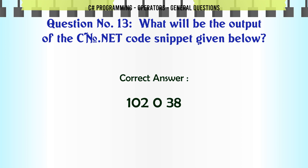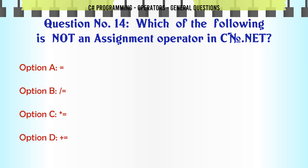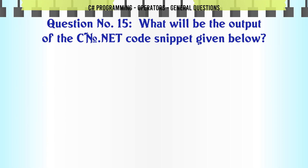Which of the following is not an assignment operator in C.NET? A. B. C. D. The correct answer is D. What will be the output of the C.NET code snippet given below?